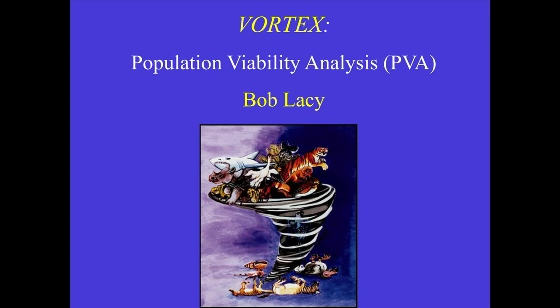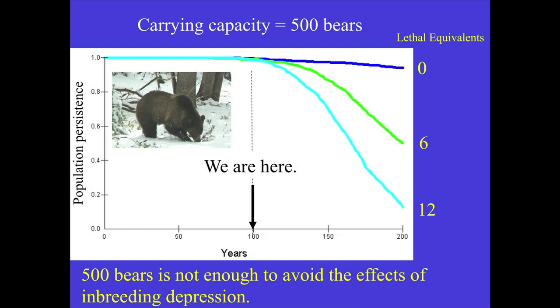One way geneticists and biologists answer this question is by building a population model. This is a population model initially developed by Bob Lacy called Vortex, where we look at all the demographic information from a population and track the relationships within it to see whether inbreeding could affect the probability of a population persisting. Applying Vortex, these are the results.